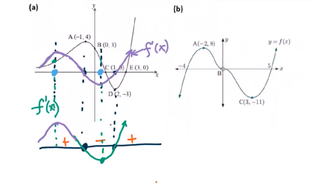Going up, this is positive. Going down, that is concave down, so here is negative. Concave up, here is positive. So you just need to connect these two, then going up, going up. That's it. This will be the second derivative of the function.